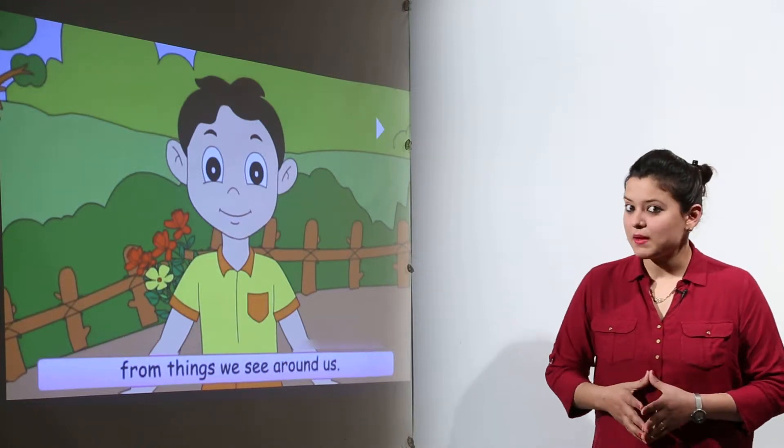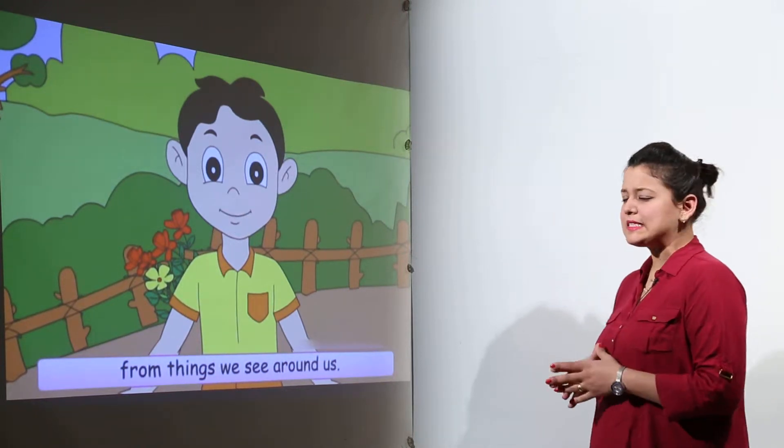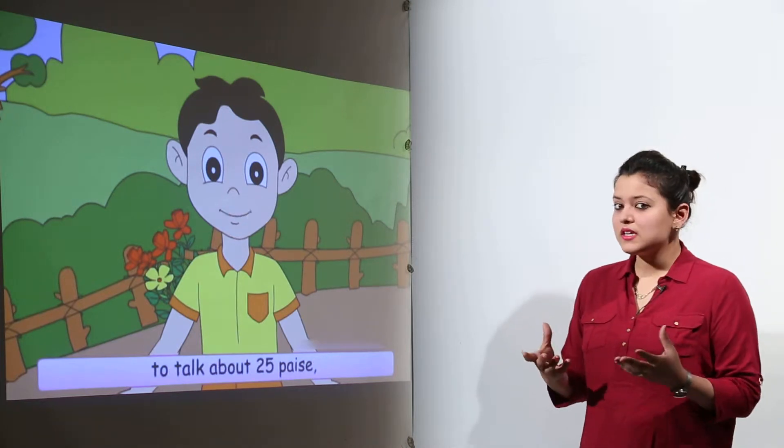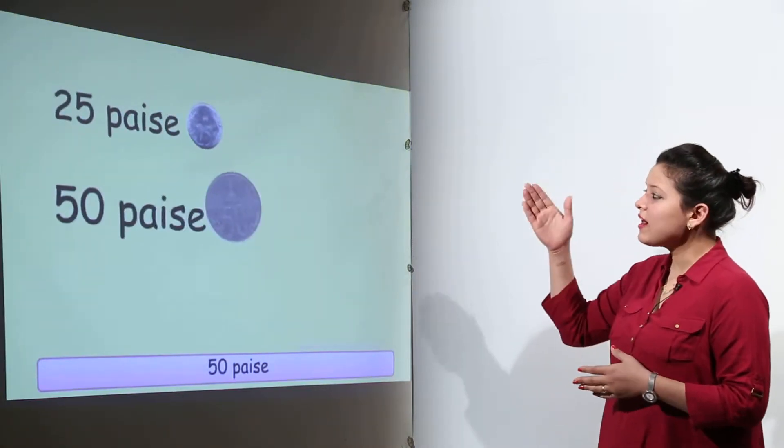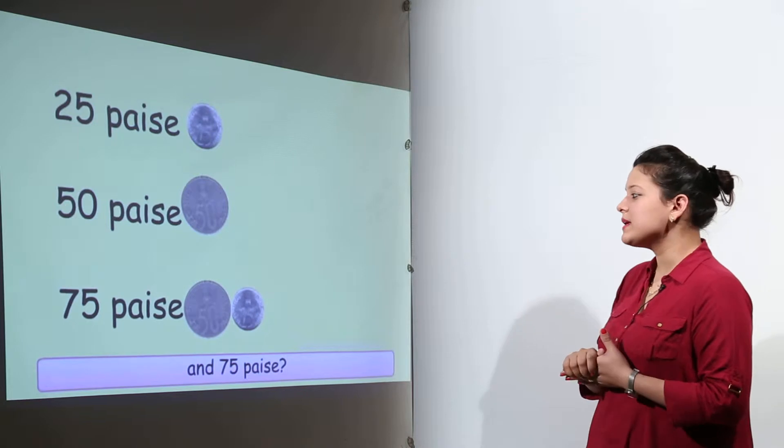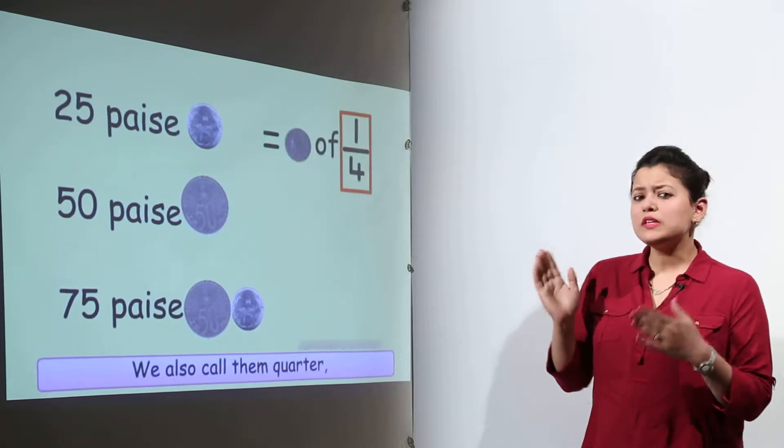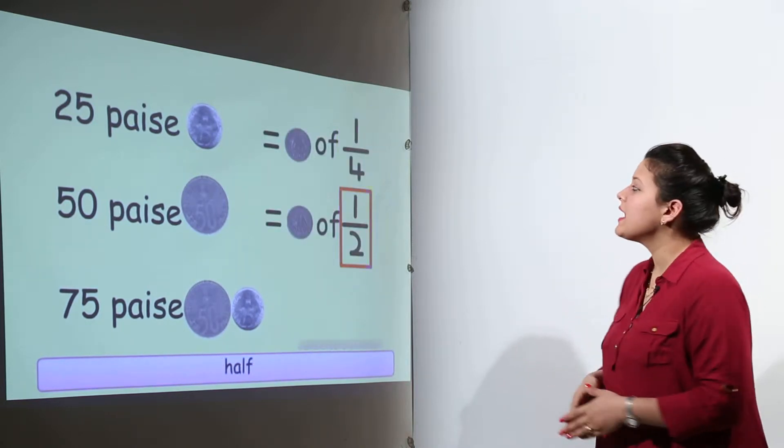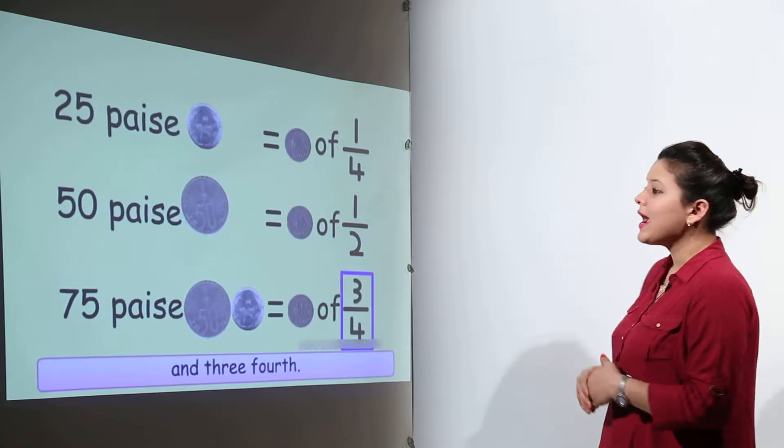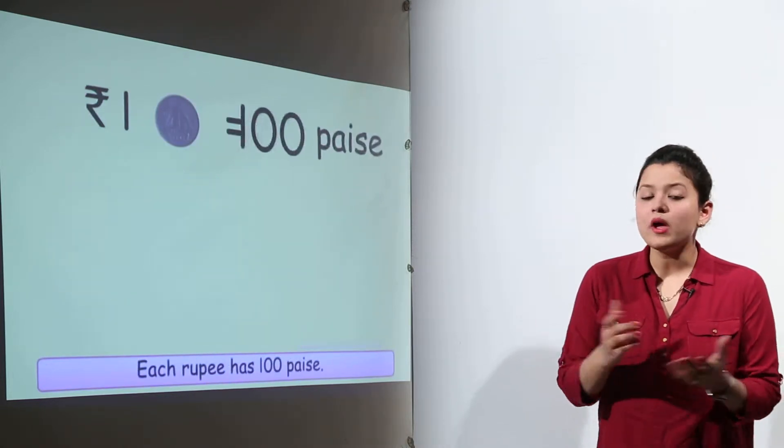Chinu came up with another example, right? Now he says that we have rupees these days and these rupees have 25 paisa, 50 paisa, 75 paisa. Now these paisas can be called as the quarter, half, and three-fourth. How and why so?